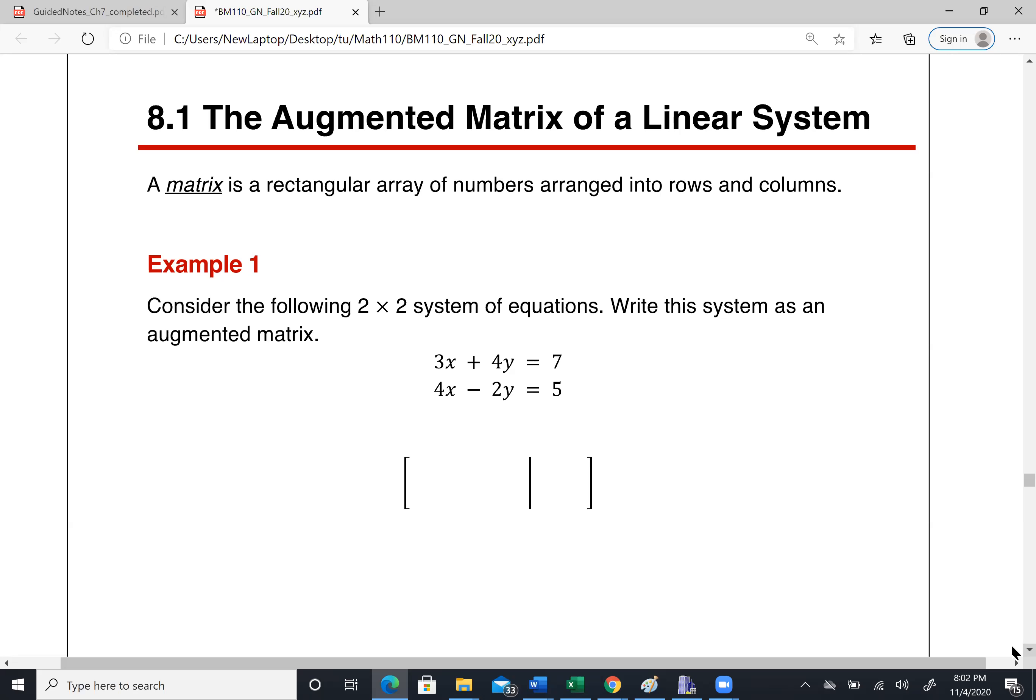So let's do an example. Example 1, consider the following two by two system of equations, write this system as an augmented matrix. So in order to write this into the augmented matrix, you're just gonna put down all the coefficient of each equation. So the first one I have 3, 4, 7.